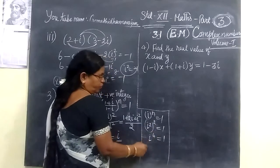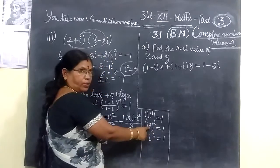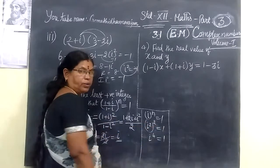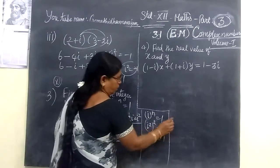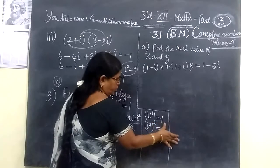Now value of n equal to 4. So because i squared minus 1, minus 1 whole square, this is equal to plus 1. Here I have to write.